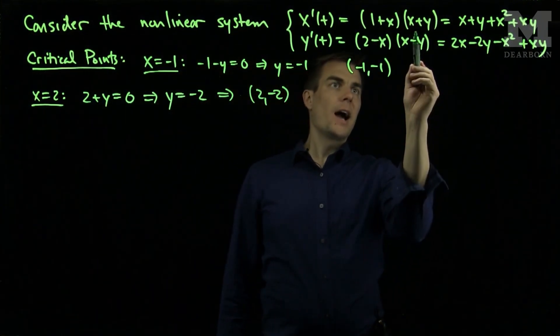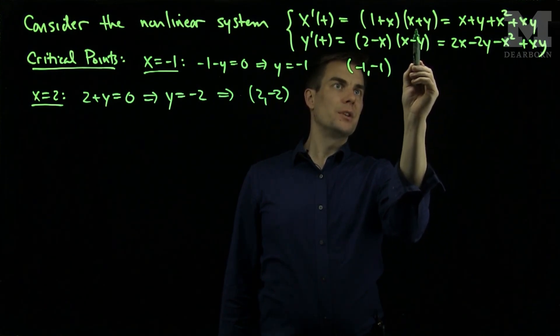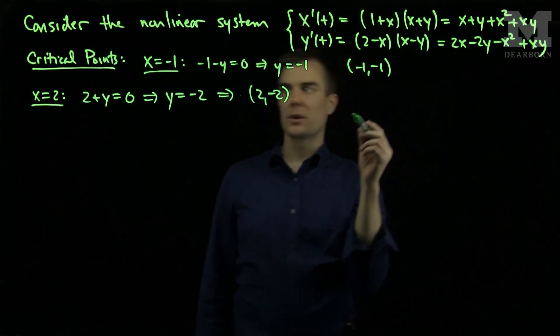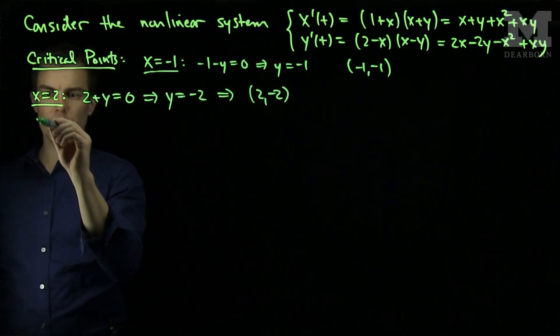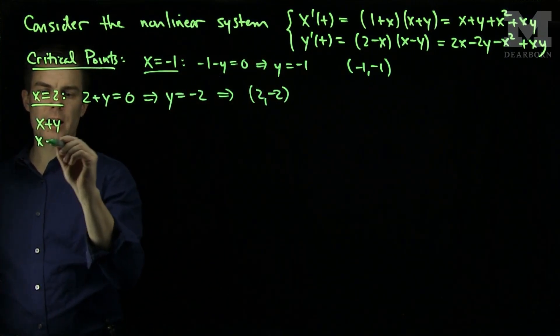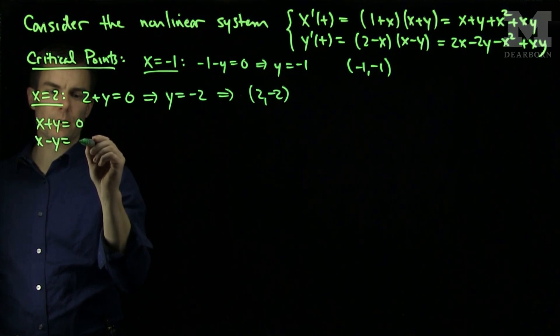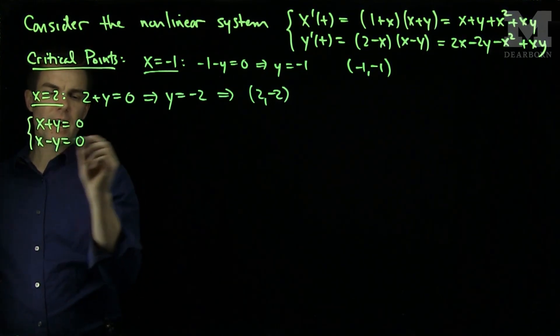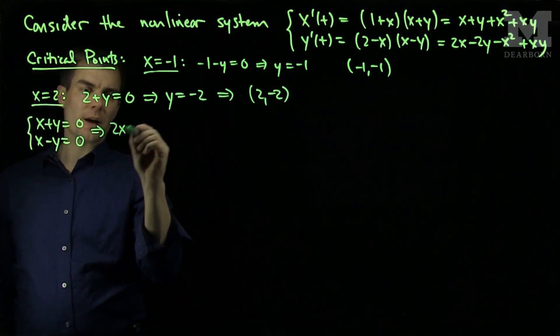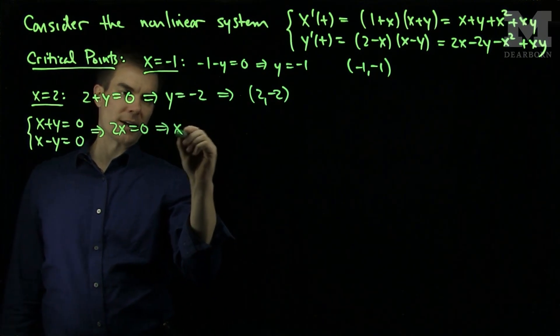Finally, I can have both of these terms be zero. I can have x plus y equals zero and x minus y equals zero. So x plus y and x minus y can both be zero simultaneously. And if I add these equations together, I will get that 2x is equal to zero, which will force x to be zero.